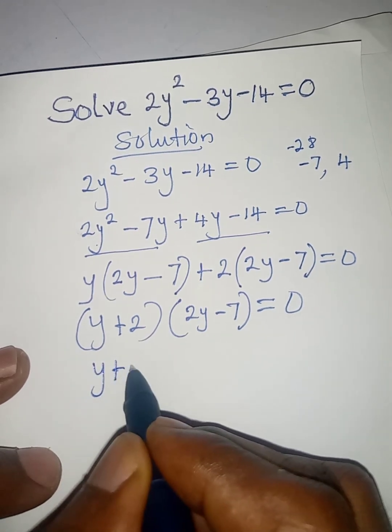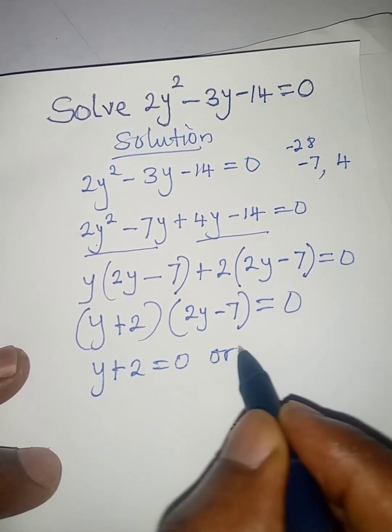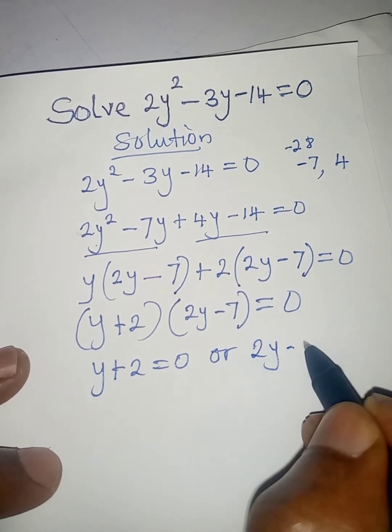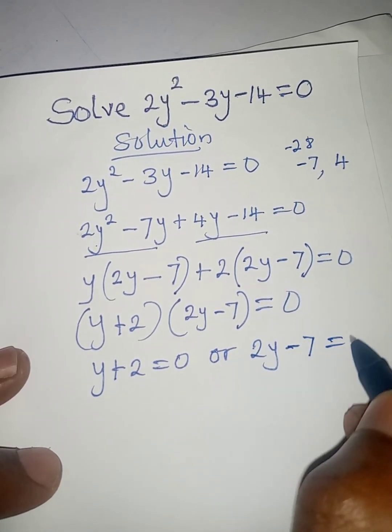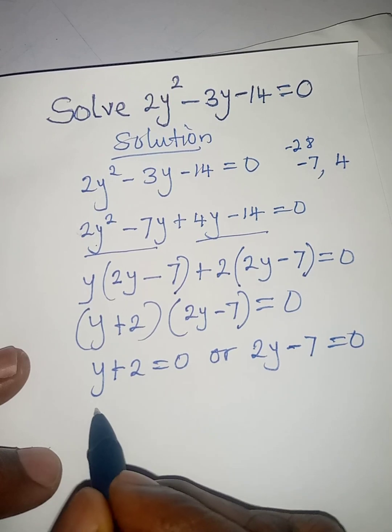y + 2 = 0 or 2y - 7 = 0. From here, y will be equal to 0 - 2, or on this side